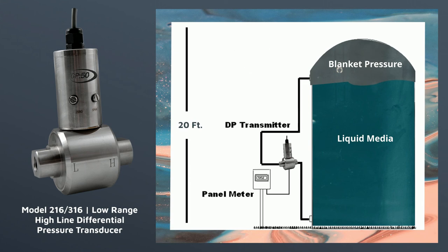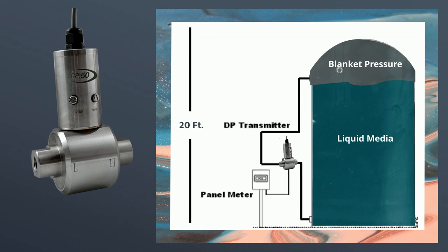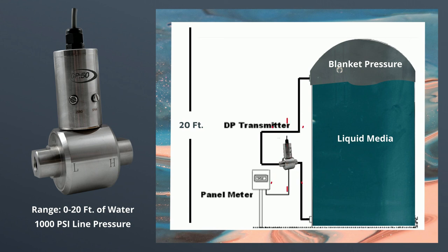The differential pressure transmitter will measure the gas blanket and liquid level on the high side. The low side will subtract out the gas blanket pressure. In the example shown you would need a differential pressure transmitter with a range of 0 to 20 feet of water and that can handle 1000 psi of line pressure. As the liquid level changes depth the transmitter will sense this, and if the gas blanket pressure changes it will also cancel out in your total head pressure readings.